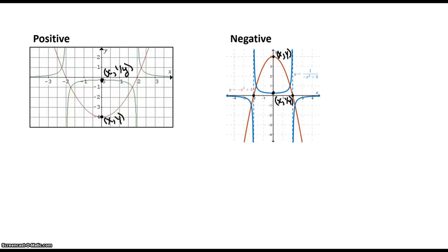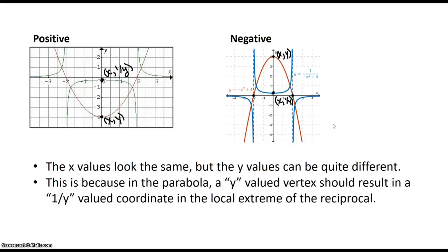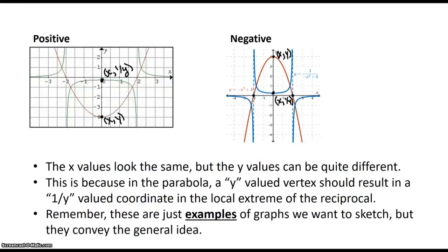Looking at the positive and negative graphs again: if the vertex is at some point (x, y), one can reason that the local extremum of the reciprocal must be of the form (x, 1/y). The x values look the same, but the y values can be quite different. This is because a y-valued vertex in the parabola should result in a 1 over y coordinate in the local extremum of the reciprocal.